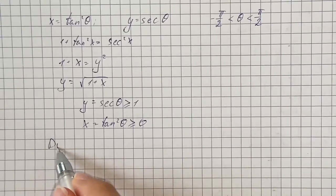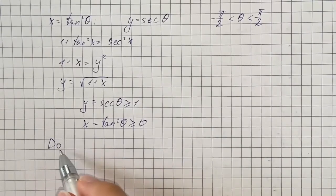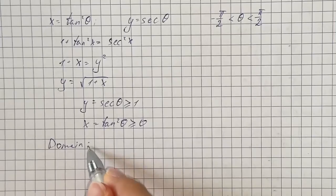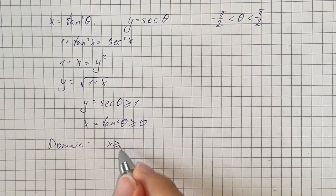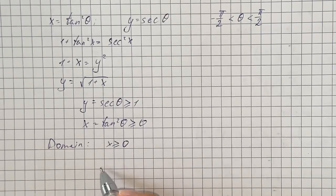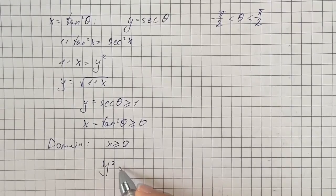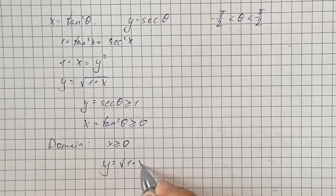So the domain of the Cartesian form is x is greater than or equal to 0, and the equation is y equals square root of 1 plus x.